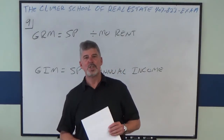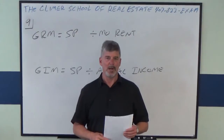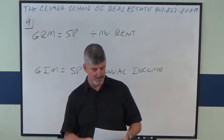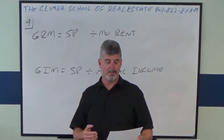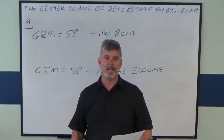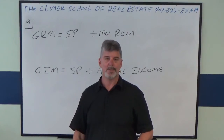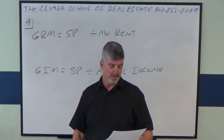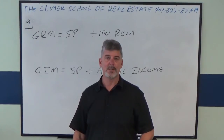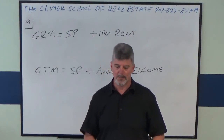This is a GRM-GIM problem. So let me read it to you. An investor is looking at a property. The monthly rent is $1,000. Annual income is $12,000. Asking price is $130,000. What are the GRM and the GIM?